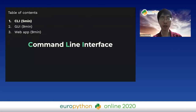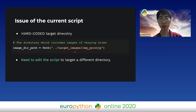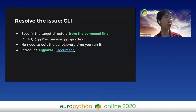Our first stop on this quick tour is CLI - command line interface. There is an issue with the current script: hardcoding. The target directory is hardcoded in the script, so we need to edit the script to target a different directory. To resolve this, we modify the script to specify the target directory from the command line, so there is no need to edit the script every time you run it.